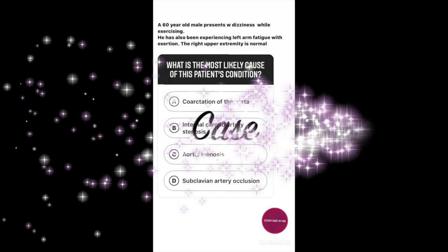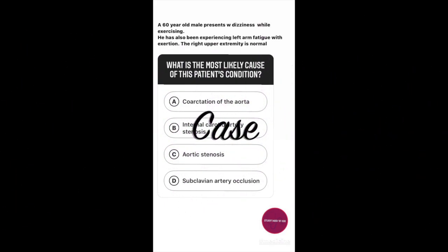We will complete this video with a case. A 60-year-old male presents with dizziness while exercising. He has also been experiencing left arm fatigue with exertion. The right upper extremity is normal. What is the most likely cause of this patient's condition?